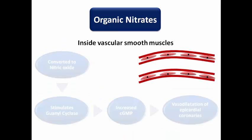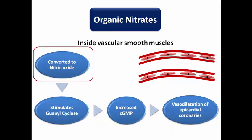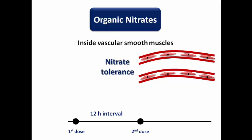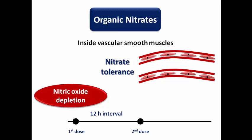The key step in the mechanism is conversion to nitric oxide, which may become depleted with recurrent or continuous use of nitrates — such as an infusion — resulting in a phenomenon called nitrate tolerance, where the patient loses the pharmacological and therapeutic effects. If a patient took two doses with a standard morning and evening schedule, there would be a 12-hour interval, leading to nitric oxide depletion after a few days and loss of the angina-prevention benefit.